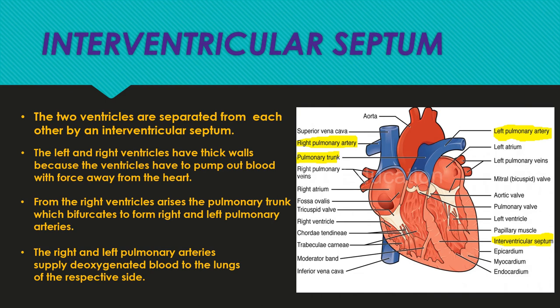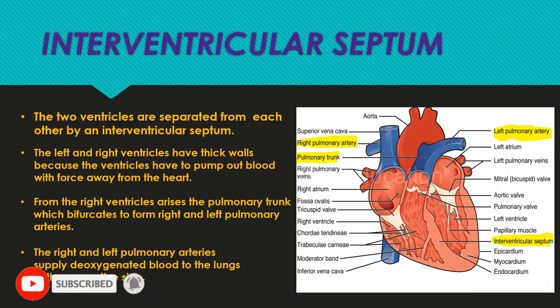Interventricular septum: the two ventricles are separated from each other by an interventricular septum. The left and right ventricles have thick walls because they pump blood out with force. From the right ventricle arises the pulmonary trunk, which bifurcates to form right and left pulmonary arteries, supplying deoxygenated blood to the lungs.